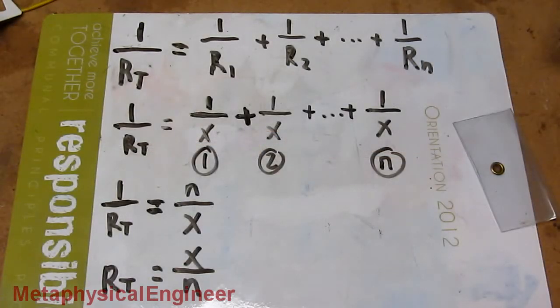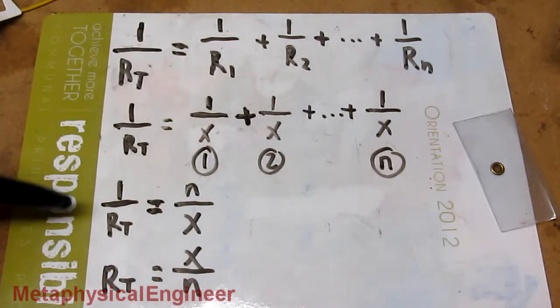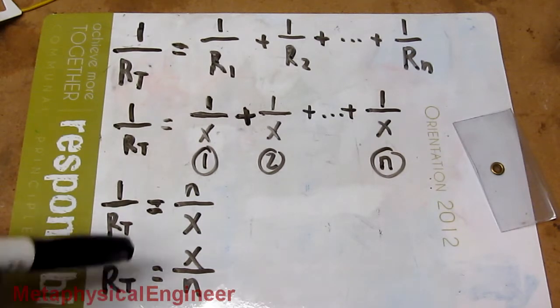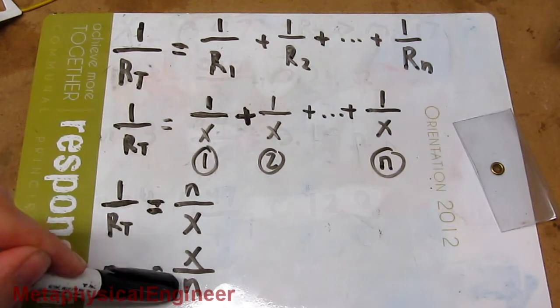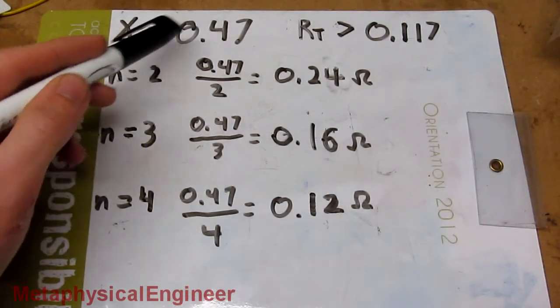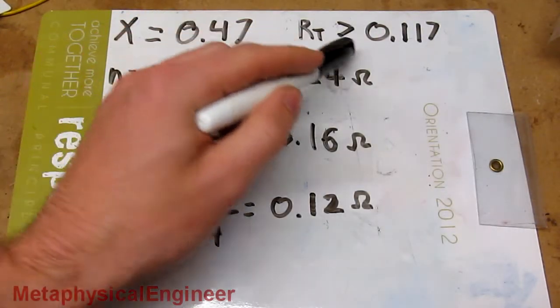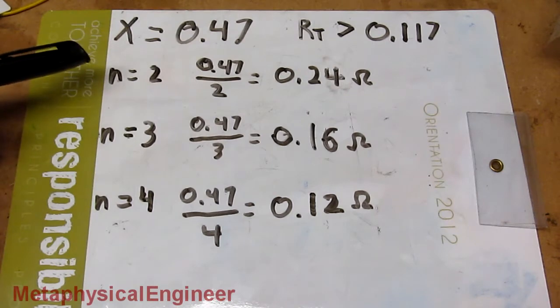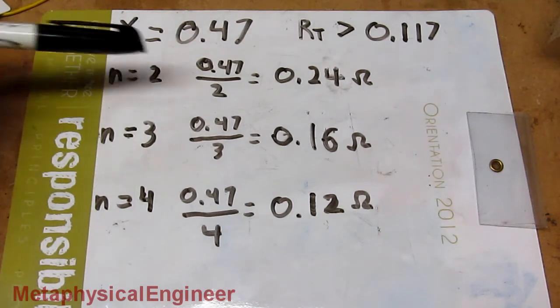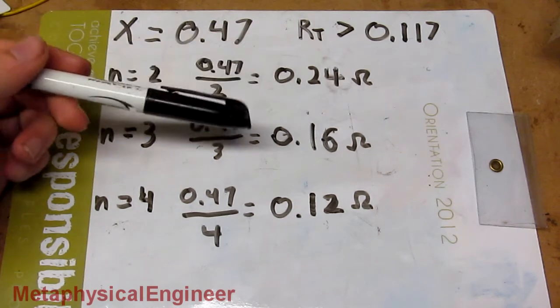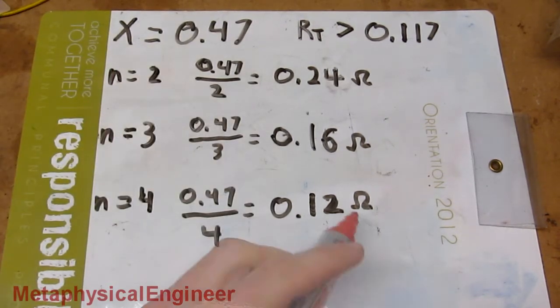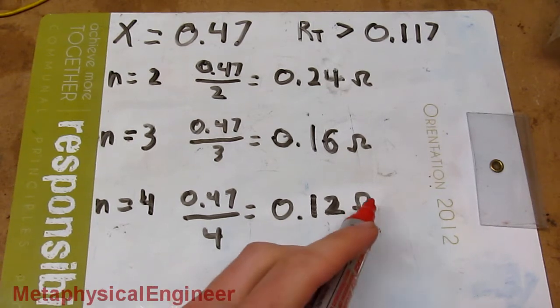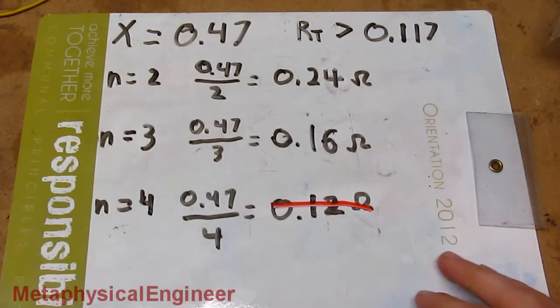0.47 ohms is too much, so I'll need a few of them in parallel. Up top, basic formula for parallel resistors. Because they're all the same, it simplifies down quite a bit. The total resistance equals the value of the resistors divided by how many there are. X is 0.47 ohms. Looking for total resistance greater than 0.117 ohms. That's the value of the nichrome that caused the trouble. I have four resistors total, so we got three combos, resulting in 0.24 ohms, 0.16 ohms, or 0.12 ohms. This is too close to the original value of the nichrome, so let's just get this off the board immediately.